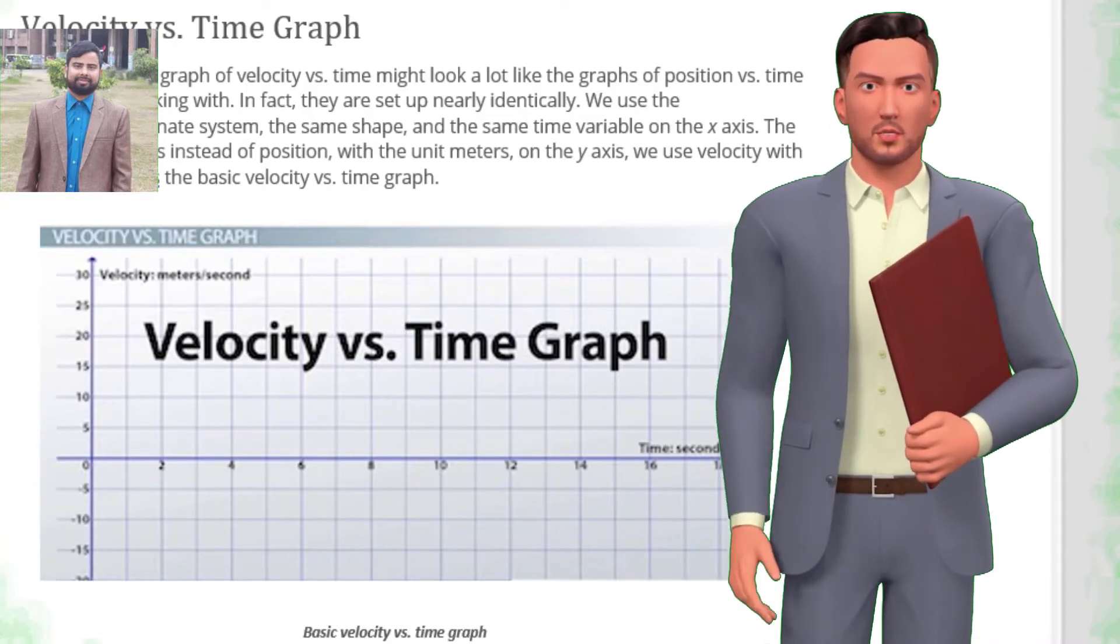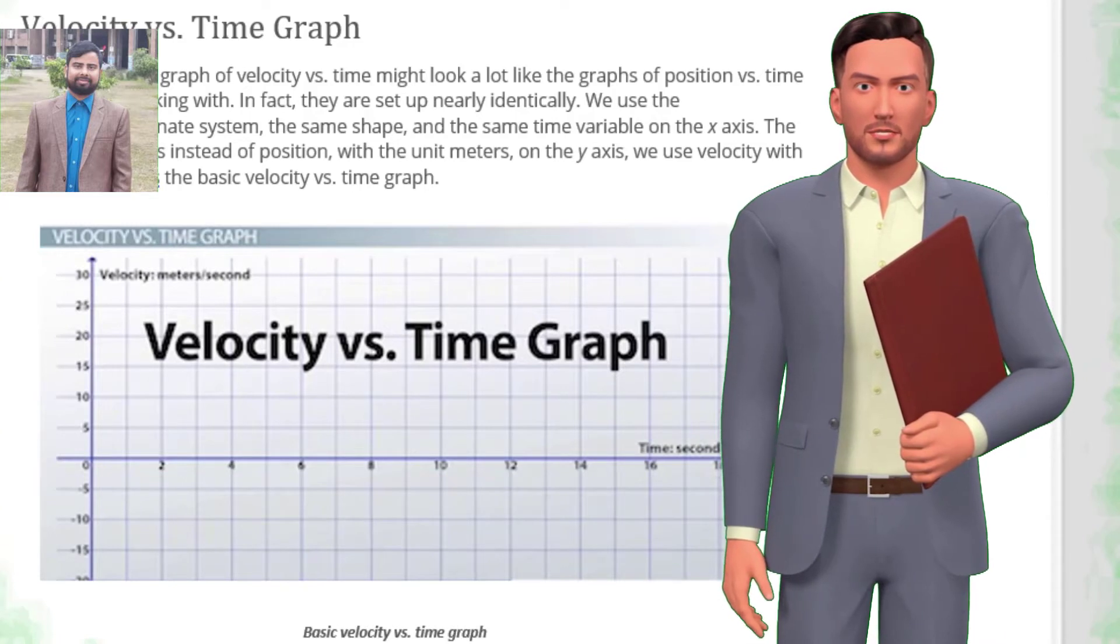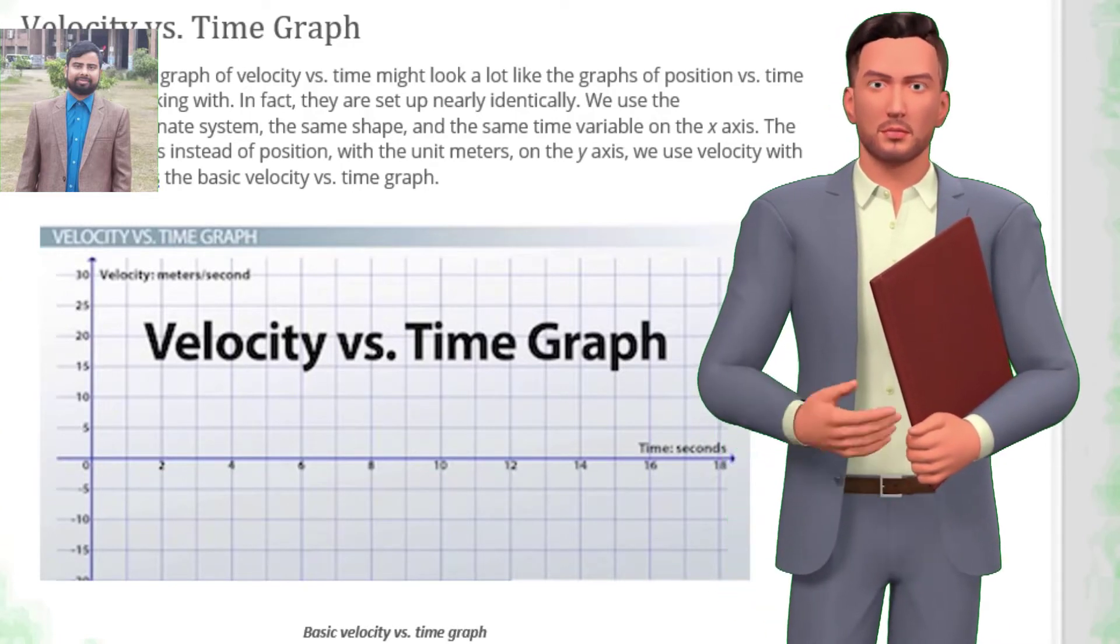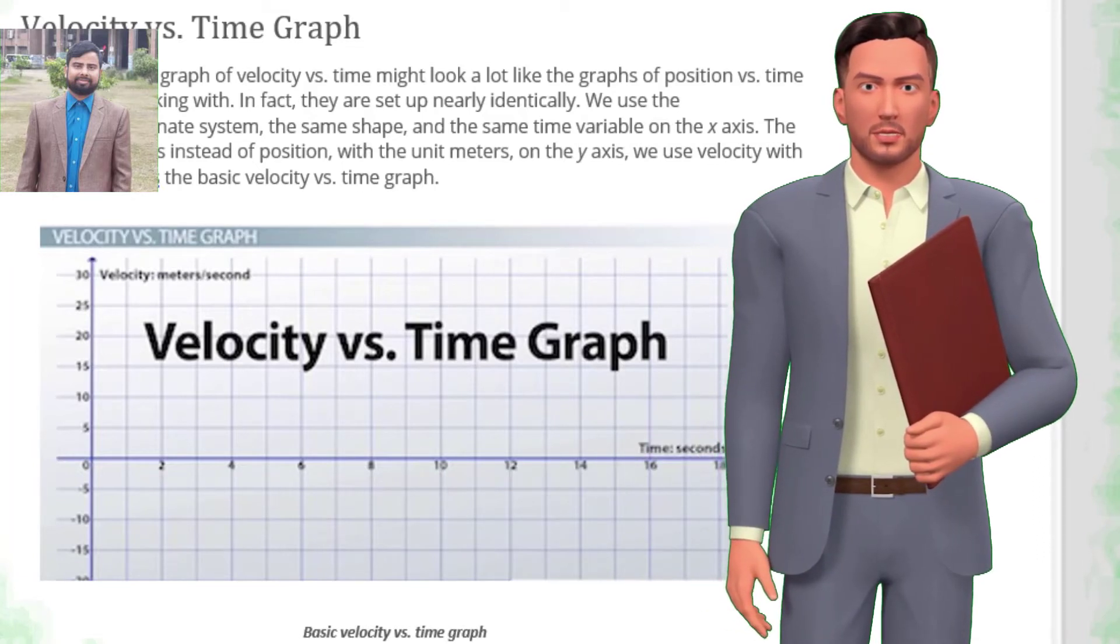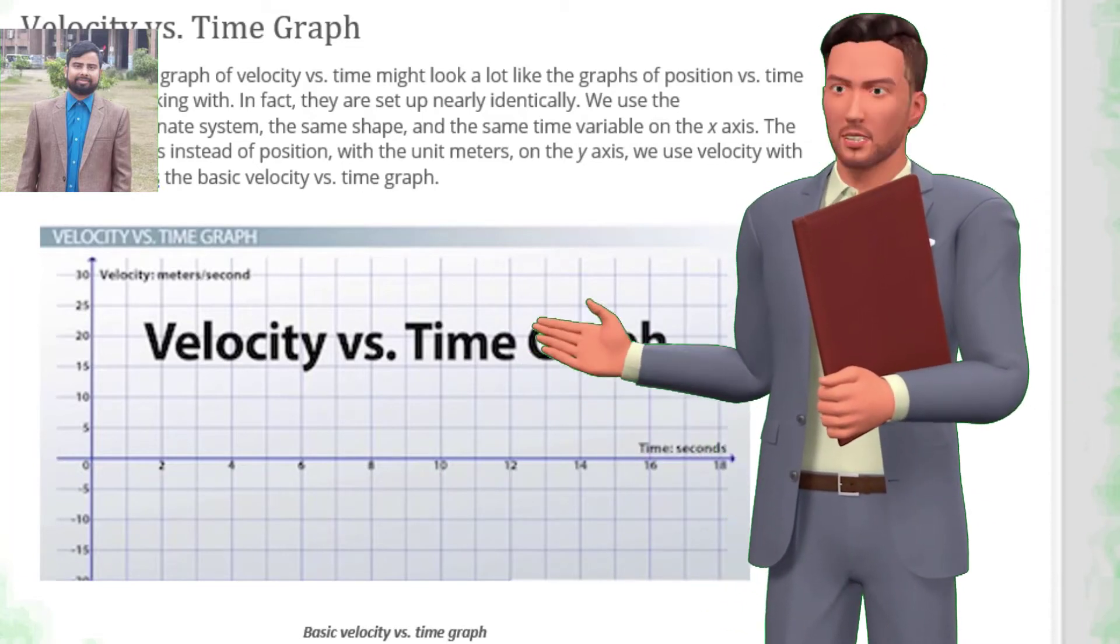And the same time variable on the x-axis. The only difference is instead of position, with the unit meters on the y-axis, we use velocity with meters per second units. That's the basic velocity versus time graph.